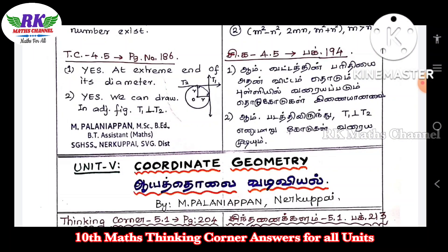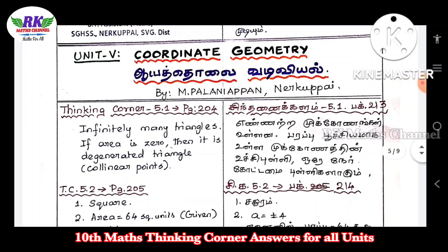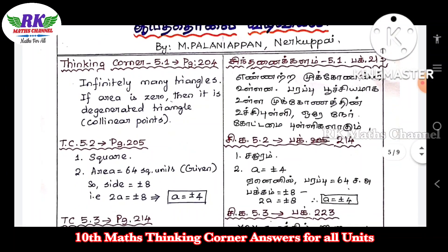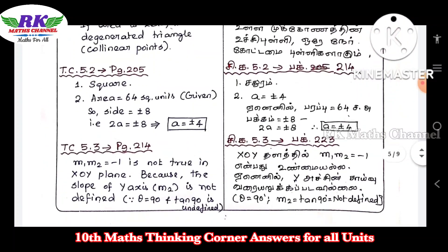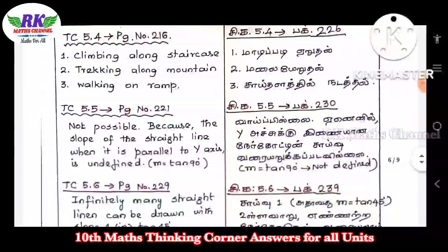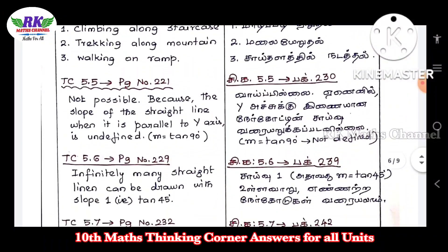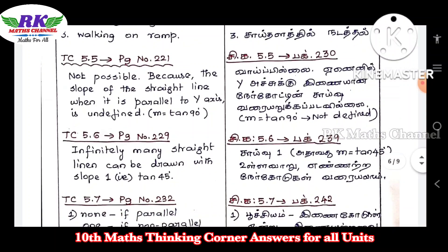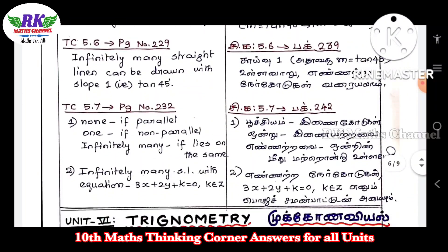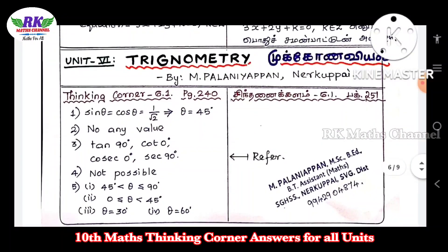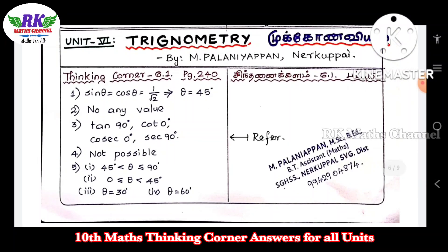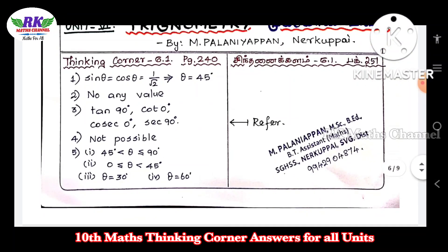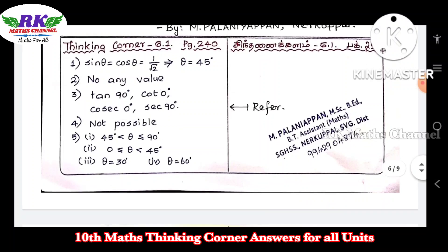Next, Unit 5, Coordinate Geometry: page number 204, 205, 210, 214, 216, 229, 232. Next, Trigonometry: page number 240.